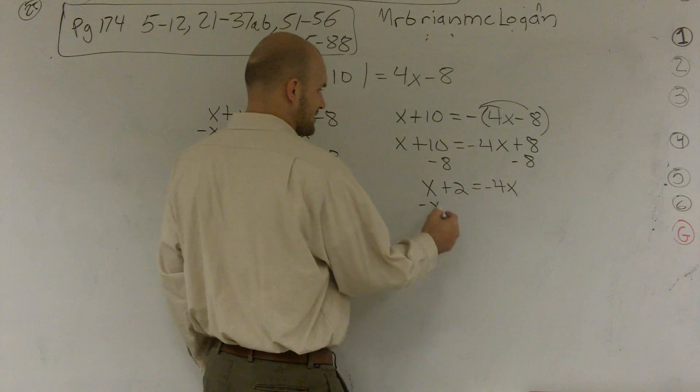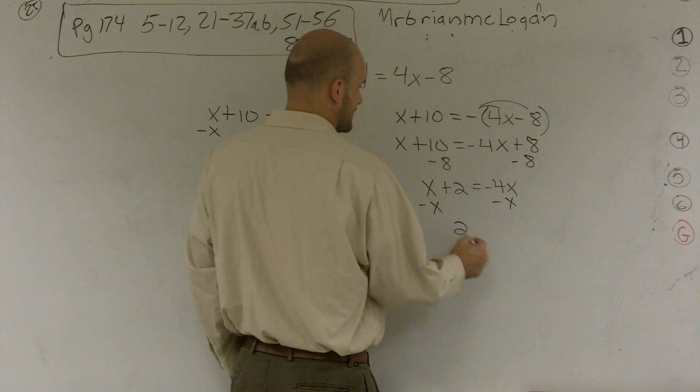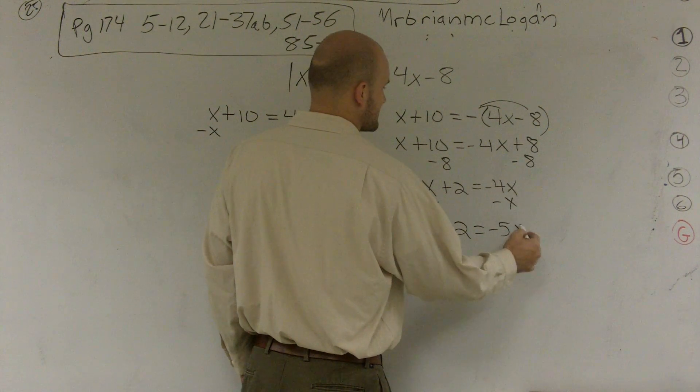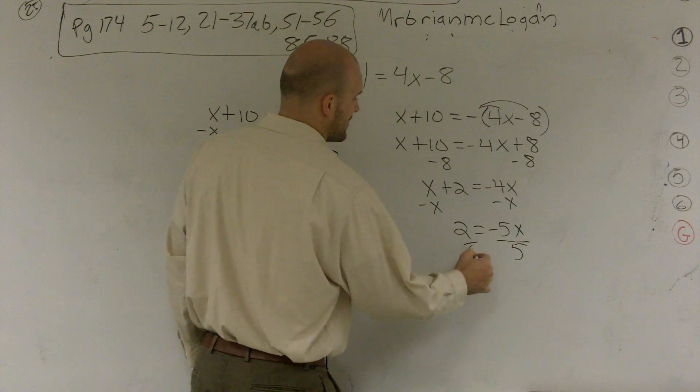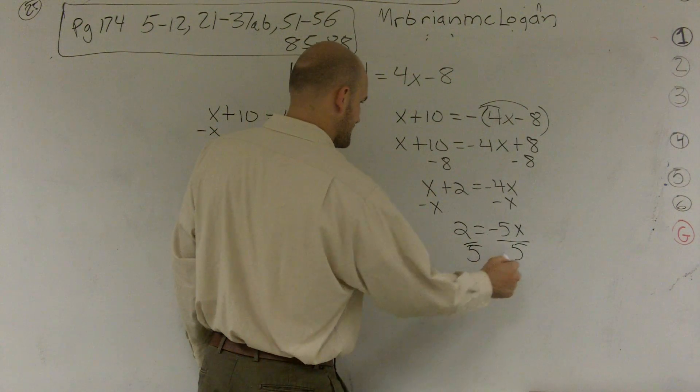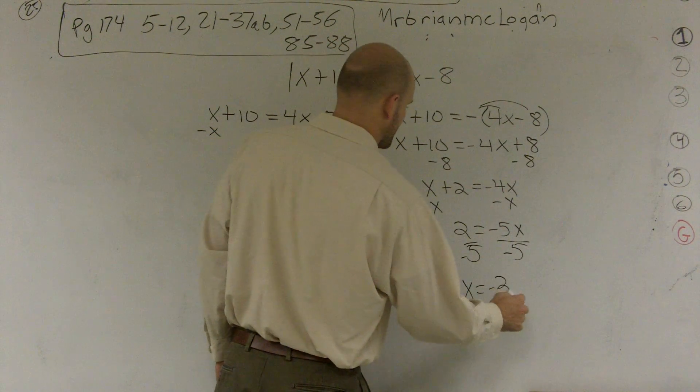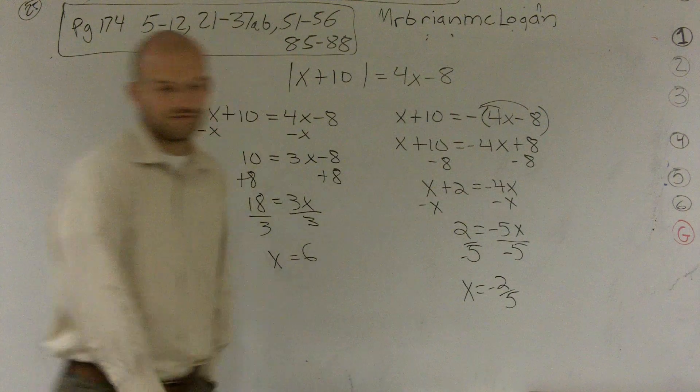And let's see here. Then I can subtract my x. And I get 2 equals a negative 5x. Divide by negative 5. Therefore, x equals a negative 2 fifths.